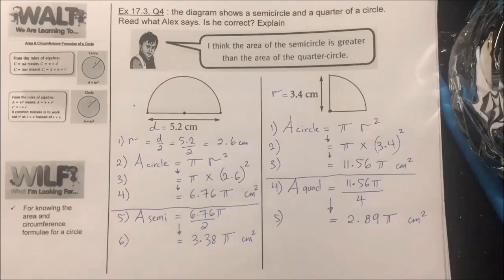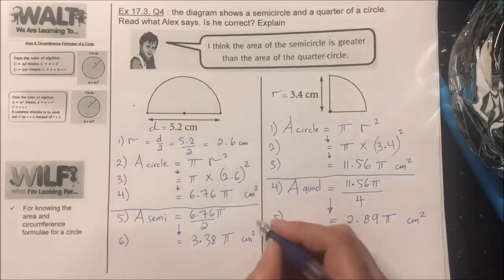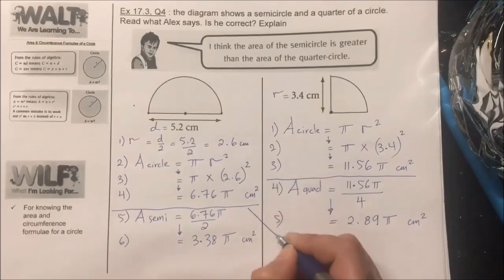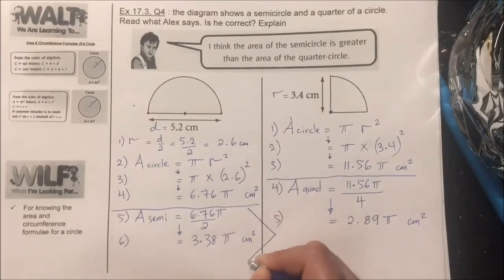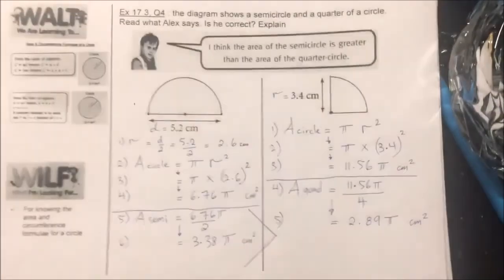Now we can compare: 3.38π is greater than 2.89π. So the semicircle has a larger area than the quadrant. Thank you for watching.